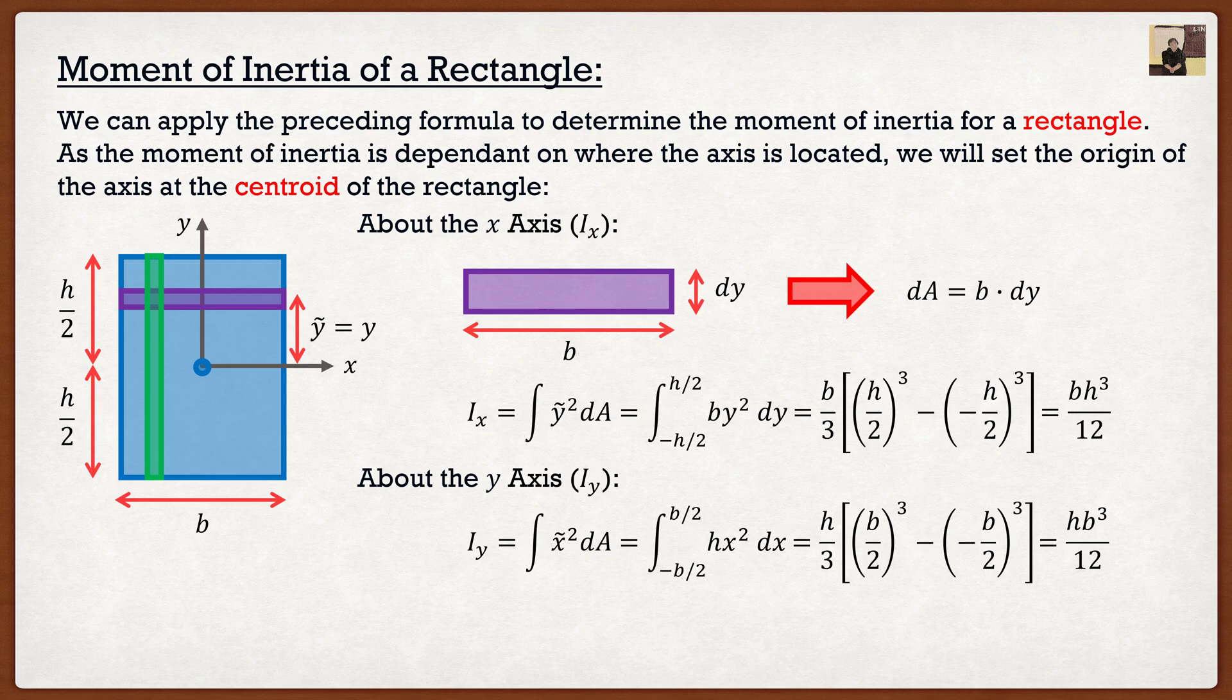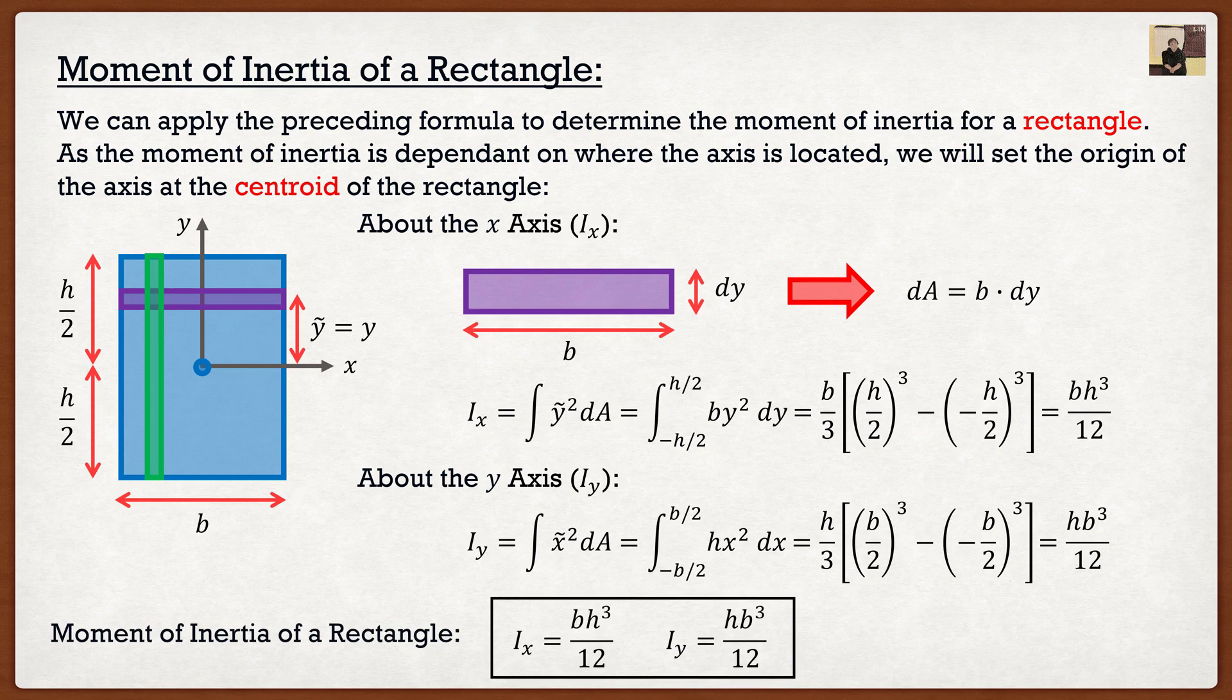So we can conclude that the moment of inertia for a rectangle about the centroidal axis is just going to be base times height cubed, divided by 12 for the x axis, and height times base cubed, divided by 12 for the y axis.